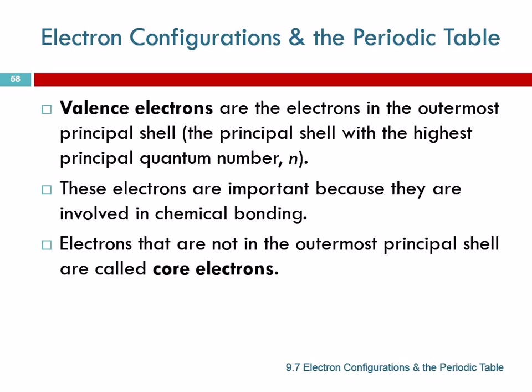In argon, that was 3 because we ended up with 3p6. 3 is the highest level. In the hotel, it's the highest floor that has any electrons staying on it. All of the electrons in that highest floor that has anybody in it, those are the valence electrons.